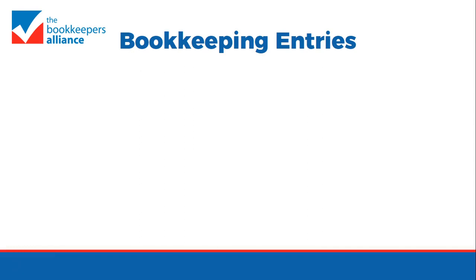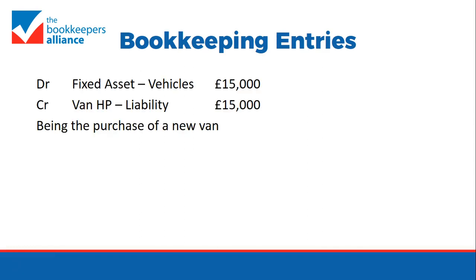The first thing we need to look at is the initial bookkeeping entries. We have the creation of the fixed asset, so we debit the fixed asset vehicles account for the £15,000 cash price, and then credit the Van HP liability account for £15,000.